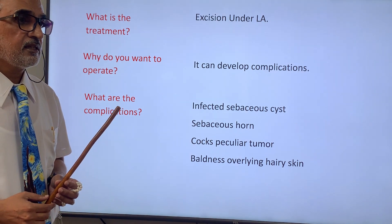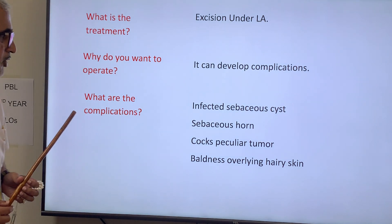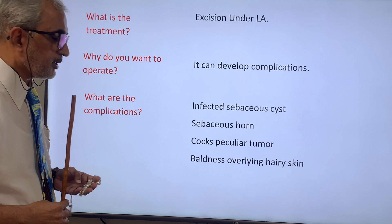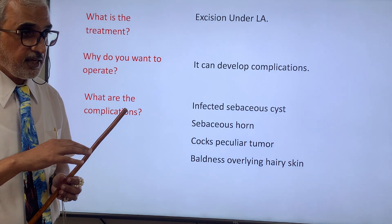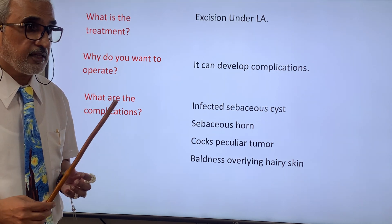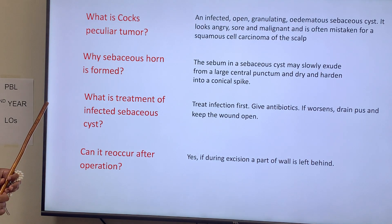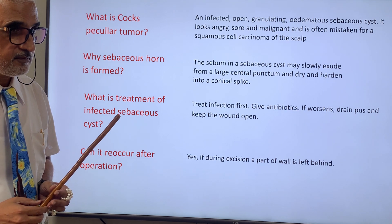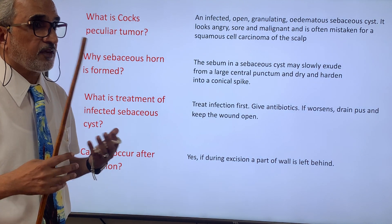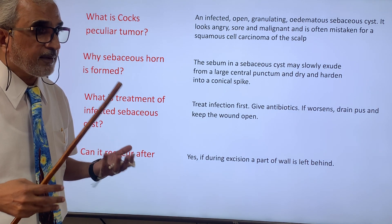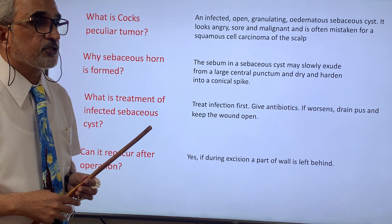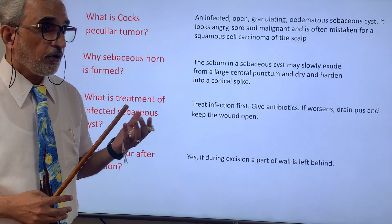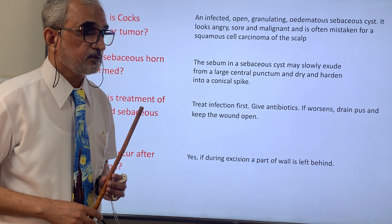If you leave it behind, it can get complicated. The complications are: infected sebaceous cyst, sebaceous horn, cock-peculiar tumor, and if present over an area where hair are prominent, the hair do not grow — giving rise to baldness over that area. The cock-peculiar tumor is a misnomer — it is not actually a tumor. When an infected cyst ruptures, pus drains out and healing occurs by granulation tissue. Since it is infected, it does not heal properly, and the granulation tissue becomes exuberant and protrudes, giving an appearance of a tumor — hence the name cock-peculiar tumor.